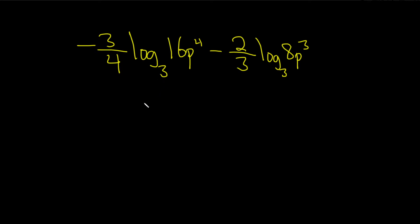So the main rule that we're going to be aiming to use in this problem is the quotient rule. It says, if you have the log base b of x minus the log base b of y, this is the same thing as the log base b of x over y. So whenever you have a subtraction, it turns into a fraction.